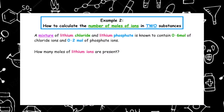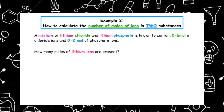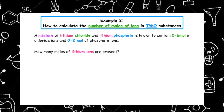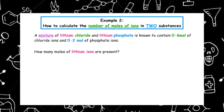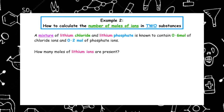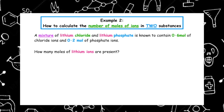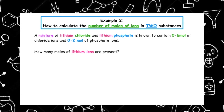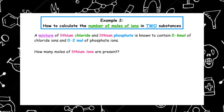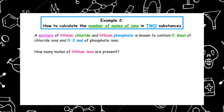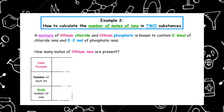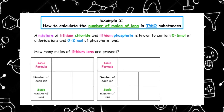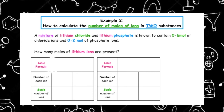In the second example, we're going to learn how to calculate the number of moles of ions when we have two substances. A mixture of lithium chloride and lithium phosphate is known to contain 0.6 moles of chloride ions and 0.2 moles of phosphate ions. How many moles of lithium ions are present? The first thing we have to do is work out the ionic formula for each substance.